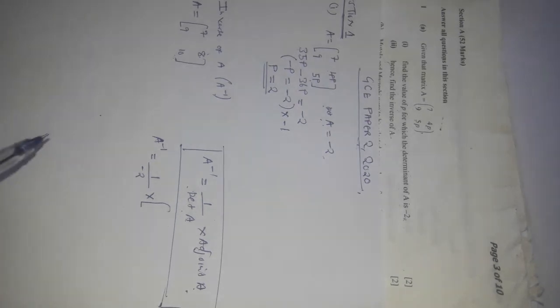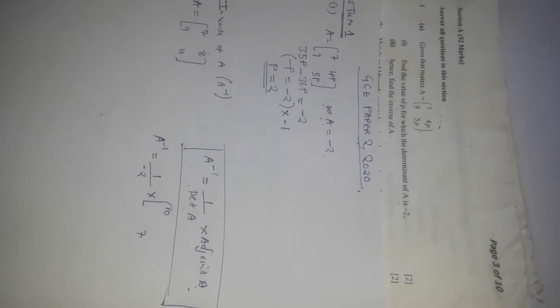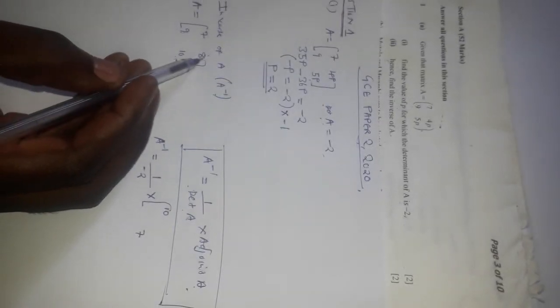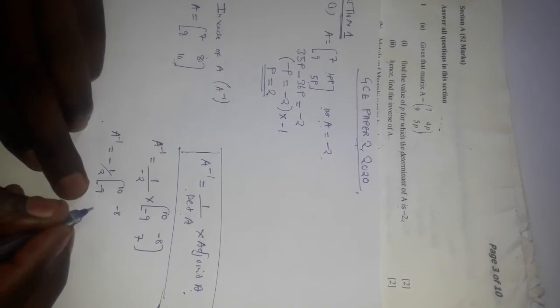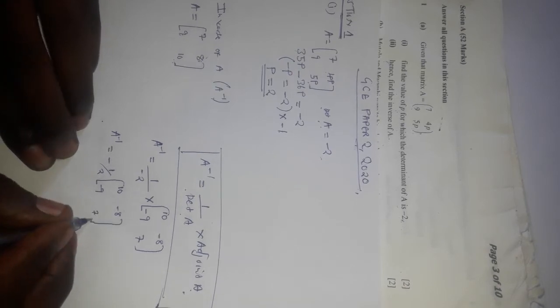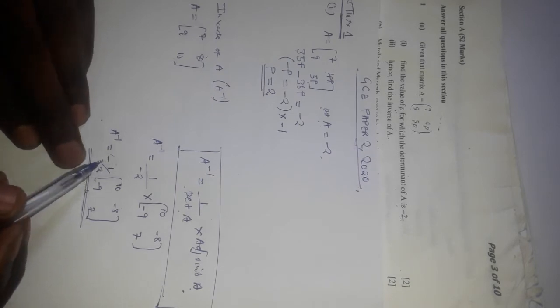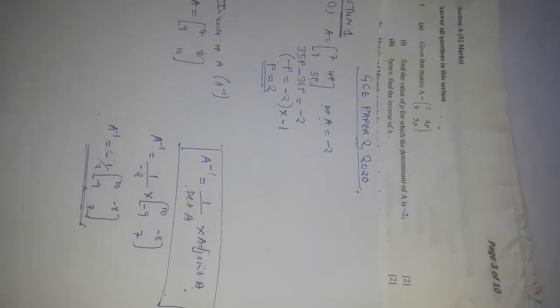The adjoint is found by interchanging the elements in the major diagonal — so 10 moves to the top-left and 7 moves to the bottom-right. For the minor diagonal elements, we change the signs: positive 9 becomes negative 9, and positive 8 becomes negative 8. So A inverse equals negative 1 over 2 multiplied by the matrix [10, -8; -9, 7]. We can also distribute the scalar into each element.